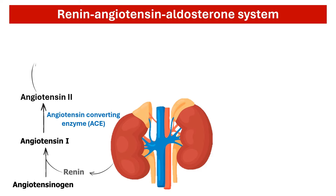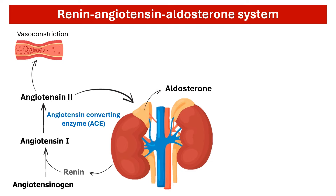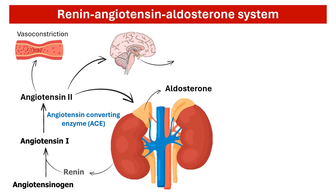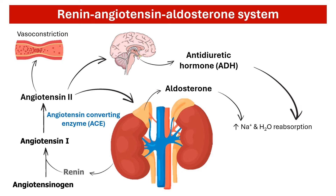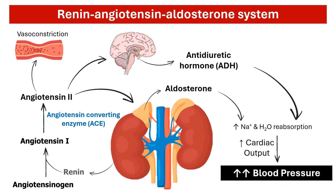Angiotensin 2 causes blood vessel constriction within the systemic circulation. It also stimulates the adrenal cortex to release aldosterone and the pituitary gland to release antidiuretic hormone, or ADH. Together, aldosterone and ADH cause the kidneys to retain sodium and water, increasing blood volume, cardiac output, and therefore blood pressure.